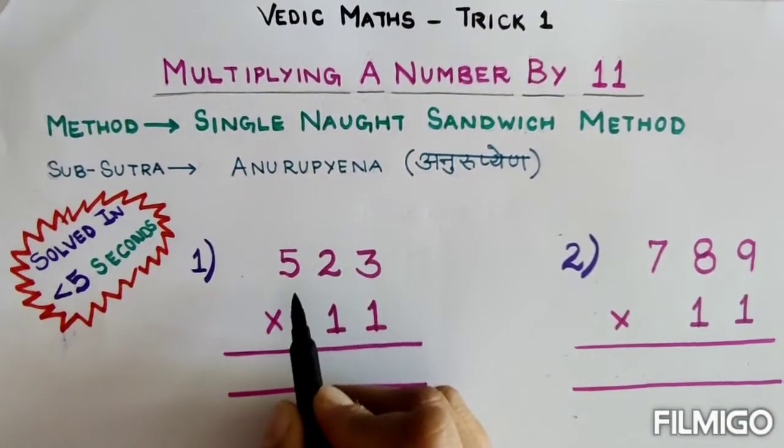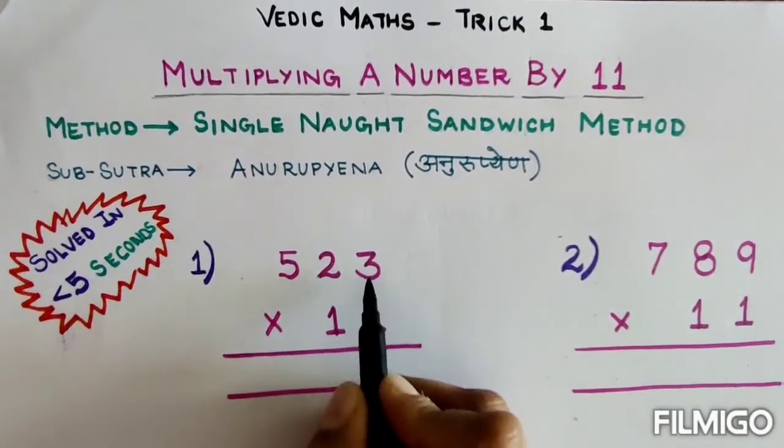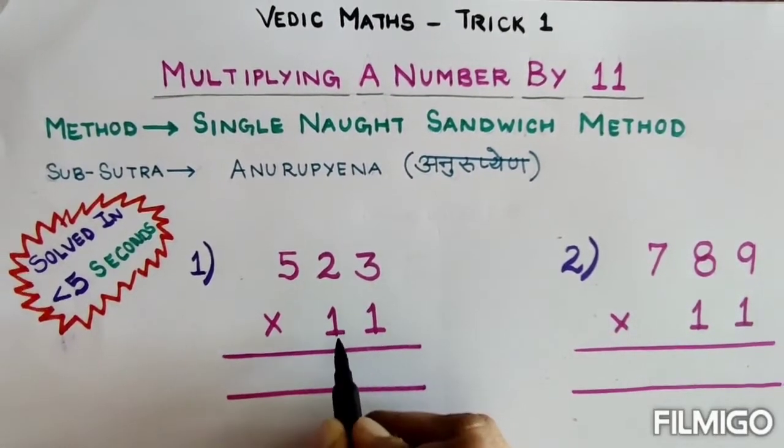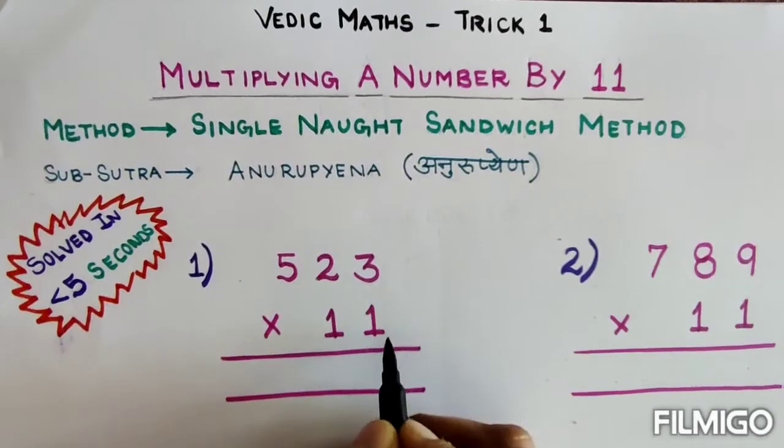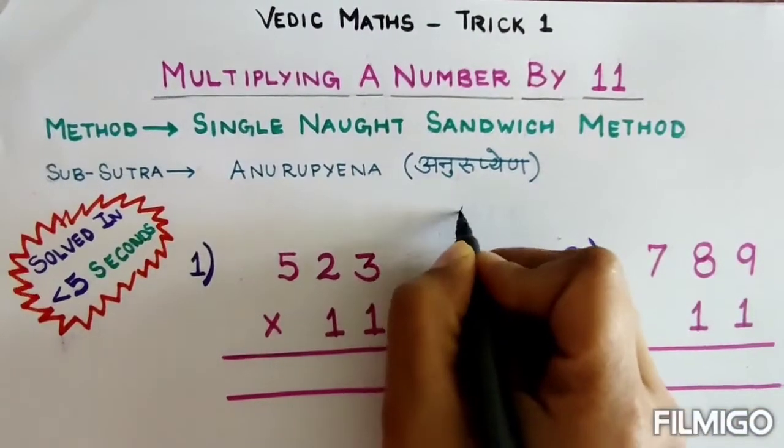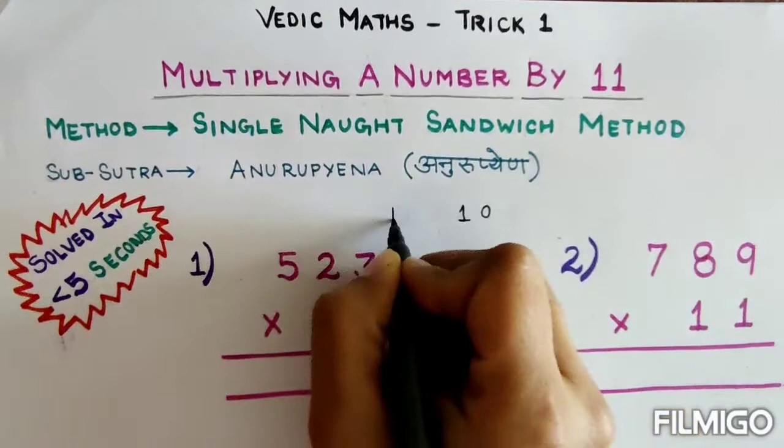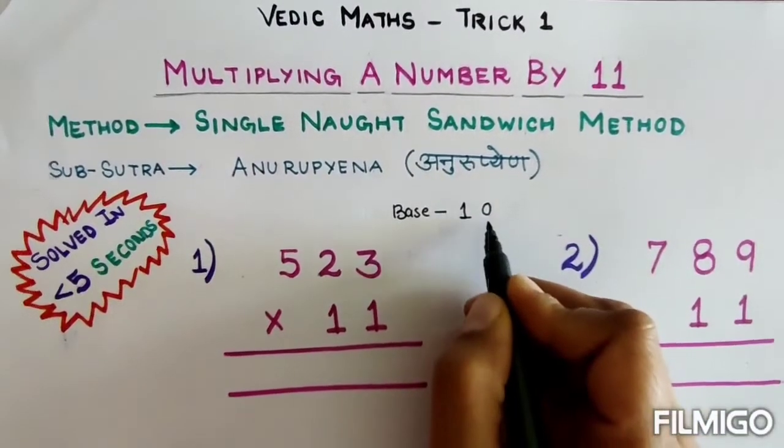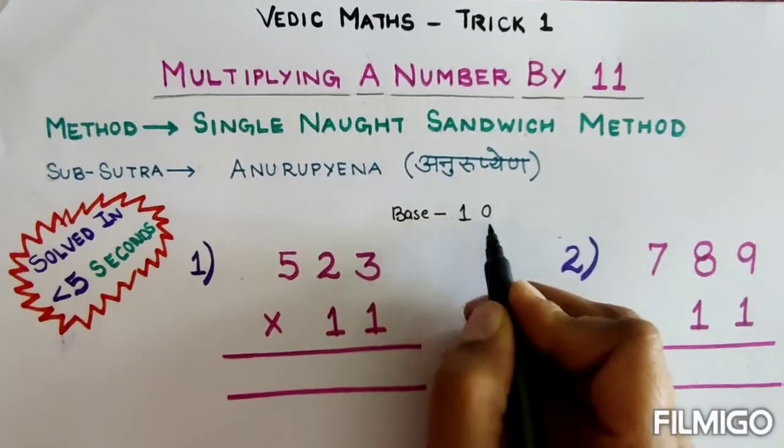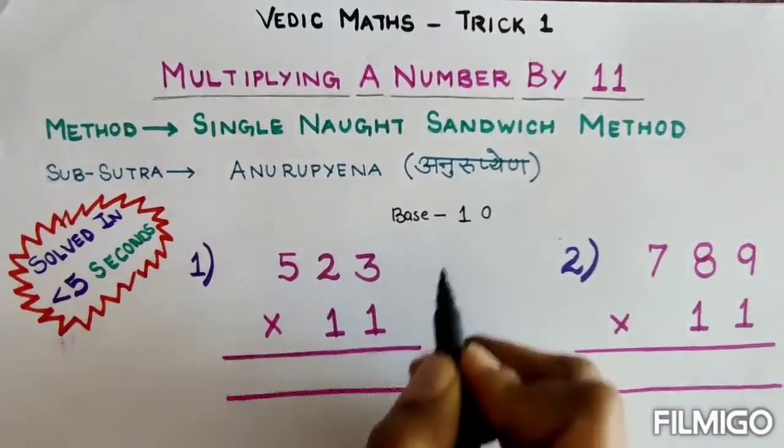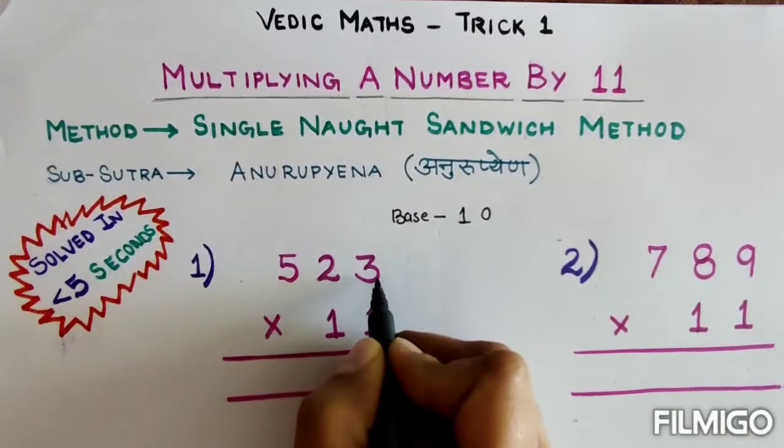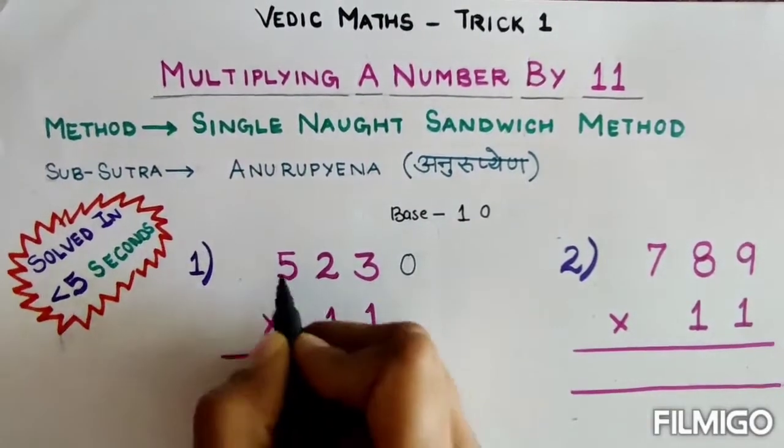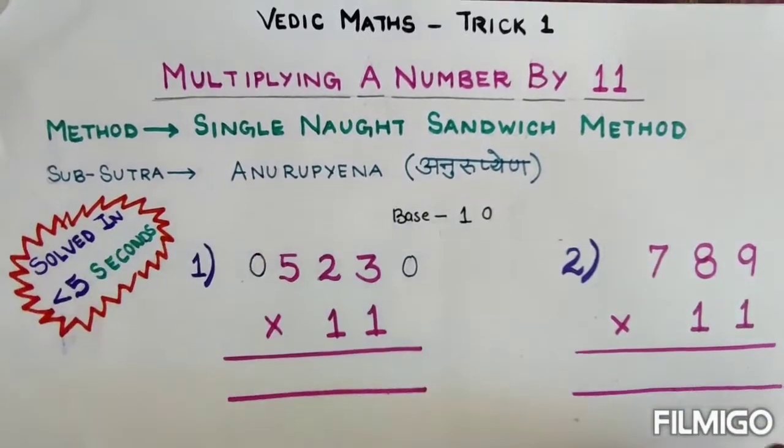I have taken one question: 523 multiplied by 11. Since I have to multiply by 11, the nearest base of 11 is 10. There is only one 0 in 10, so I will sandwich 523 with single 0 on the right and single 0 on the left side.